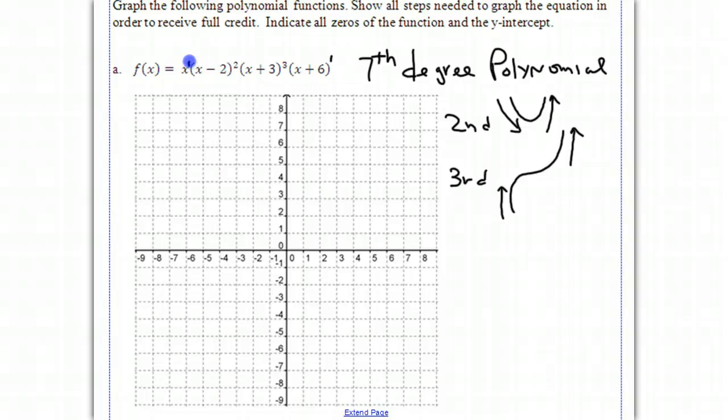And since this is a 7th degree, I know it's going to be increasing from the left and end up increasing to the right. So now that's the first step. Now that we have the shape, well, we have the end behavior.